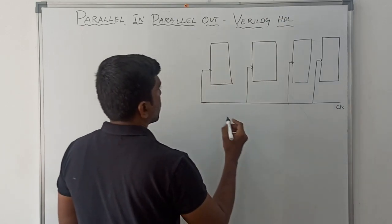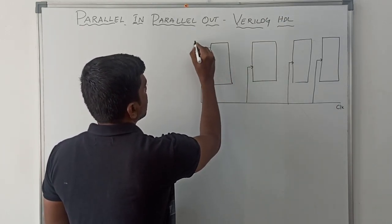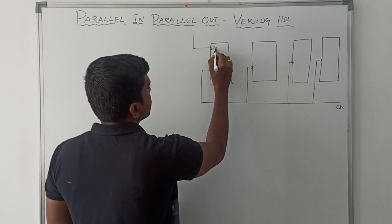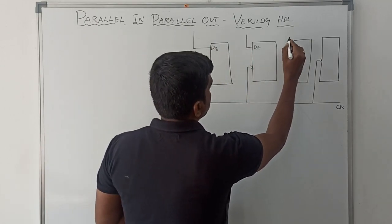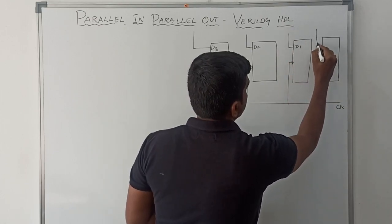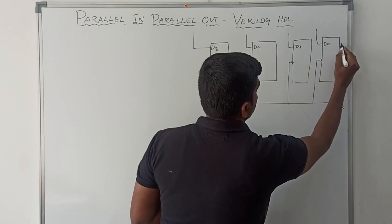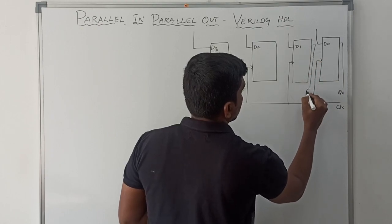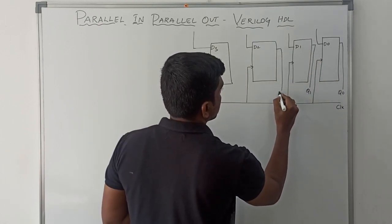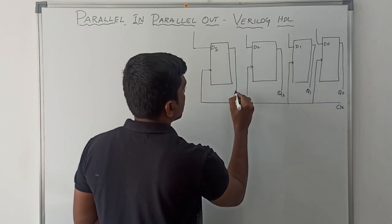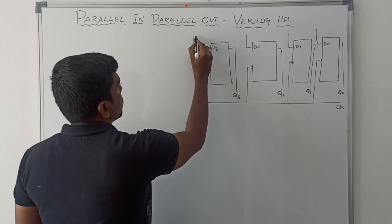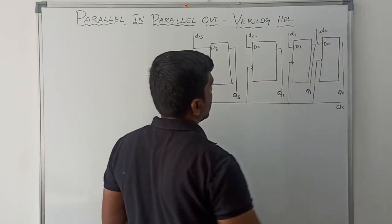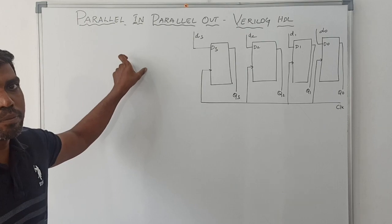This signal is clock. The inputs are D3, D2, D1, D0, and the outputs are Q0, Q1, Q2, Q3. So this is a simple block diagram for parallel-in-parallel-out.